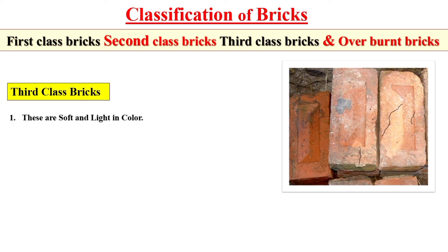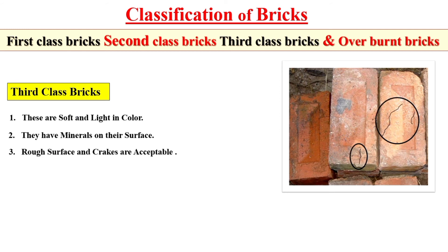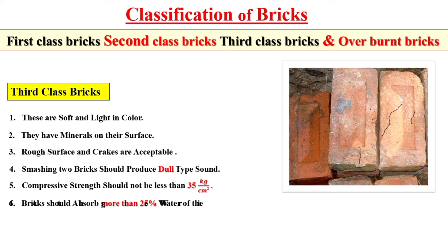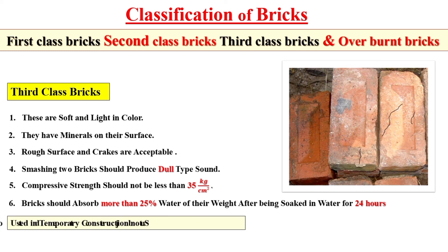Now, for third class brick: third class bricks are very soft and light in color. Due to the slight firing, third class bricks have minerals on their surface. Third class bricks have a rubbed surface and small cracks are acceptable. When two third class bricks are struck together, they produce a dull-type sound. The compressive strength should not be less than 35 kg per square centimeter. Third class bricks absorb more than 25 percent of water after being soaked for 24 hours.